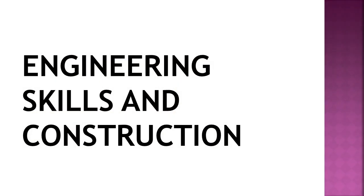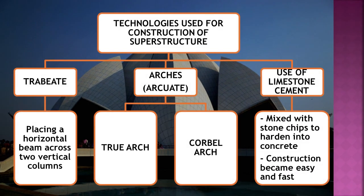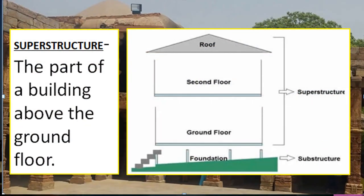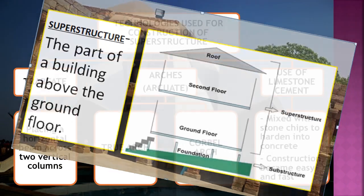The next topic is engineering skills and construction. We are going to talk about technologies used for construction of old buildings. Let's discuss some of the technologies used for construction of a superstructure. The part of a building above the ground floor is called a superstructure. If only four walls have to be created it is easy, but if a first floor, second floor, or roof has to be created, the building becomes very heavy and can fall. Architectural styles are required to make the building strong.